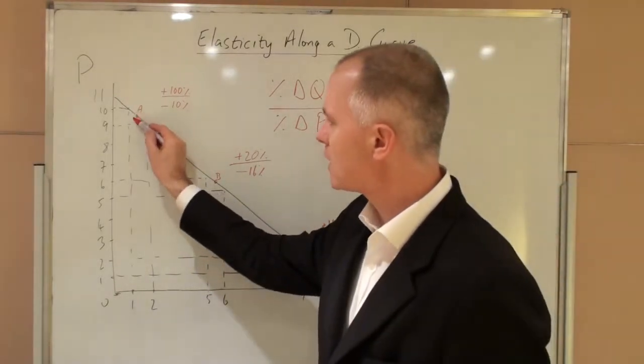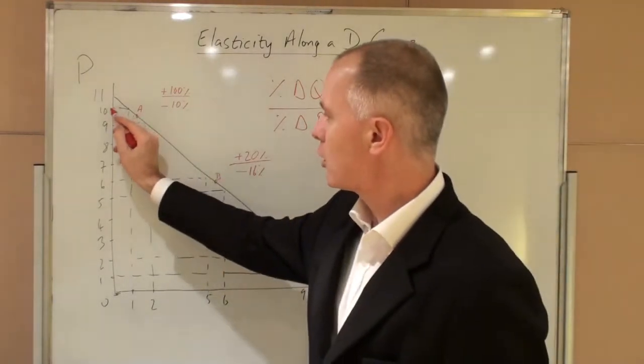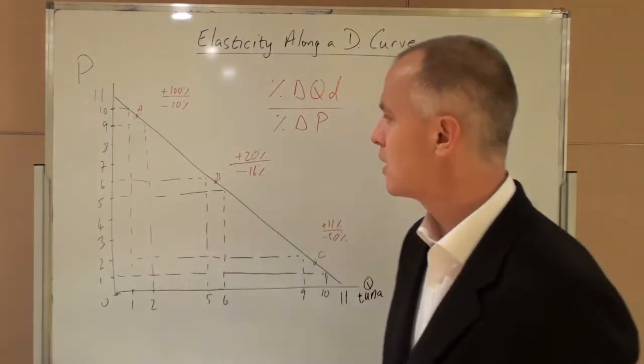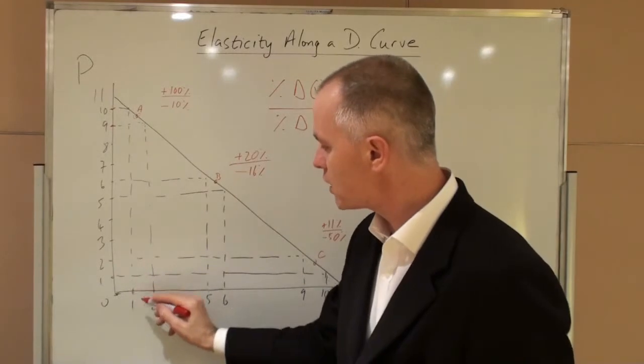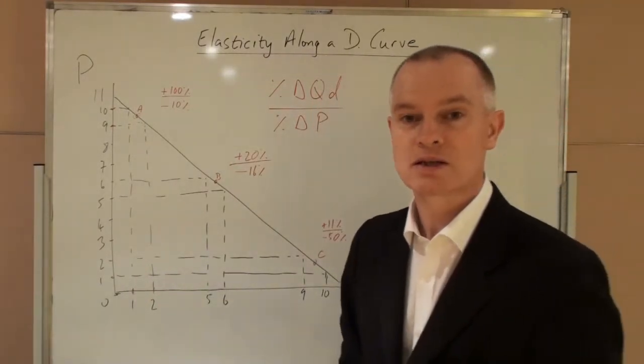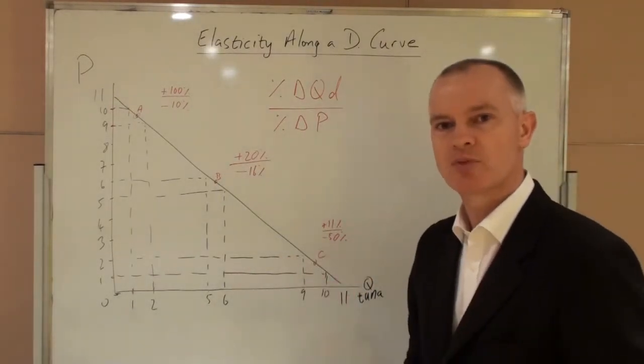So if we consider point A towards the top of the demand curve, imagine an original price of ten falling to a price of nine. Because the gradient of this line is minus one, this will cause an increase in demand of one unit. But for price elasticity of demand, the importance is not the absolute change but the proportionate change.